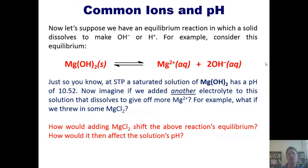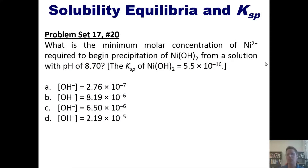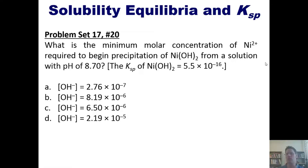Driving the reaction left means hydroxide recombines with Mg²⁺, decreasing the amount of OH⁻ freely in solution, which makes the pH less basic. Here's a related problem: what is the minimum molar concentration of nickel cation required to begin precipitating nickel hydroxide from a solution with a pH of 8.7? The Ksp of nickel hydroxide is given. Attempt it on your own, then click the link to see the board solution.